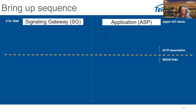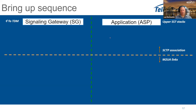Once your M2UA configuration is complete, it's straightforward: you have your MTP2 link created, attach it to an M2UA link to send somewhere. After activating your configuration, you can check whether your link comes up. Here is an overview of the basic steps of an SCTP association coming up.